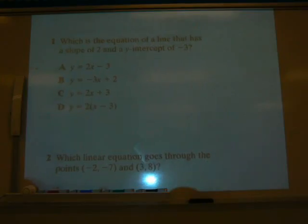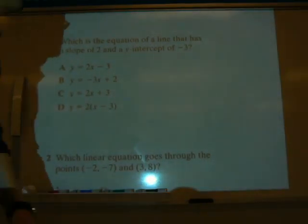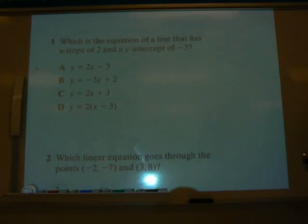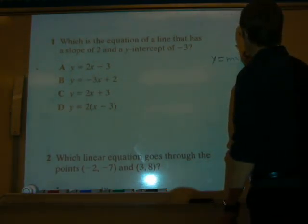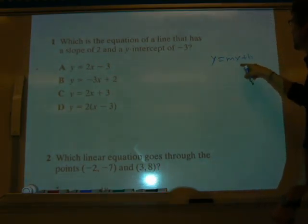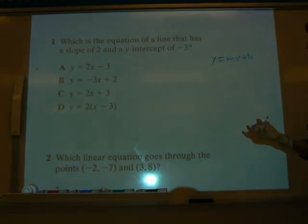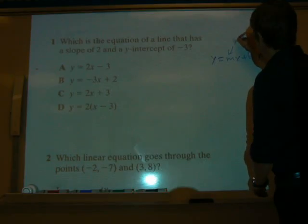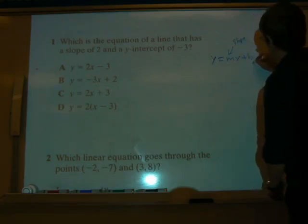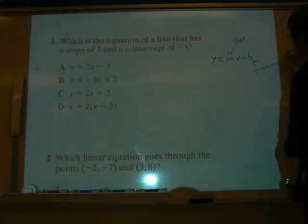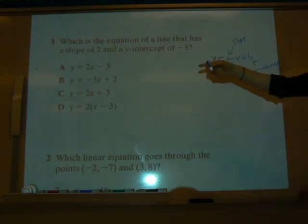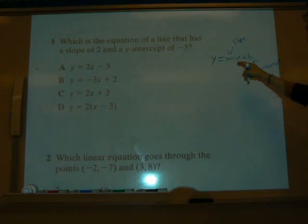What is the equation of a line that has a slope of 2 and a y-intercept of negative 3? Remember, when you have an equation of this form, y equals mx plus b, your m represents the slope and your b represents the y-intercept. So we're looking for a slope of 2 and a y-intercept of negative 3. That means a 2 here and a negative 3 here.